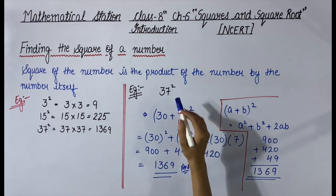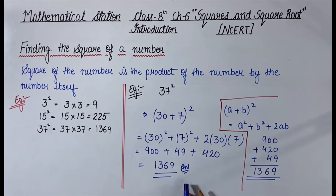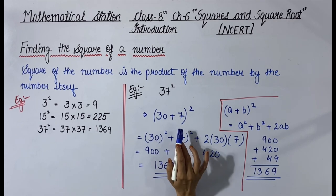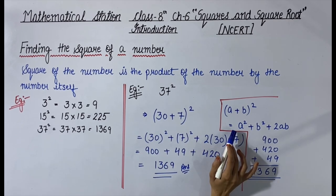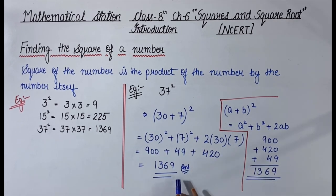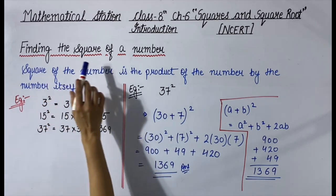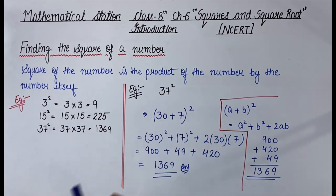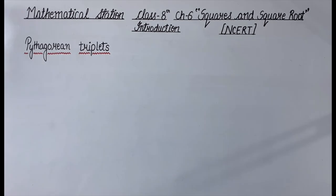So to find the square of a number, I hope you understood. Simply split the number, use the identity, and the answer will follow. This is all about finding the square of a number. Now, moving on to our next topic.